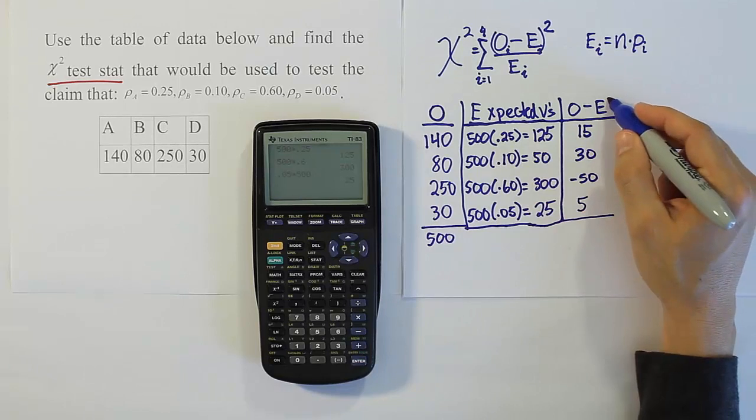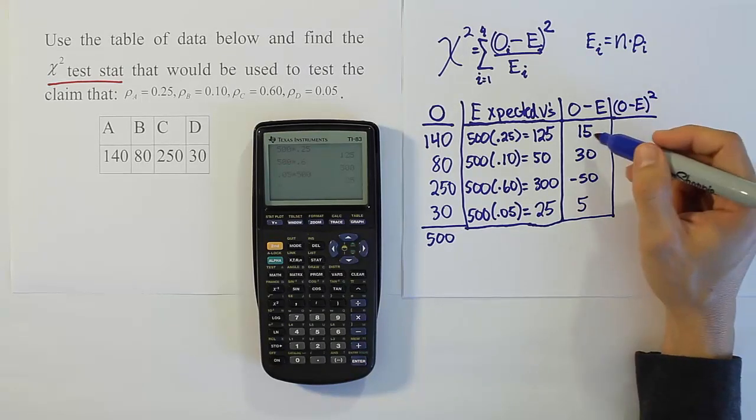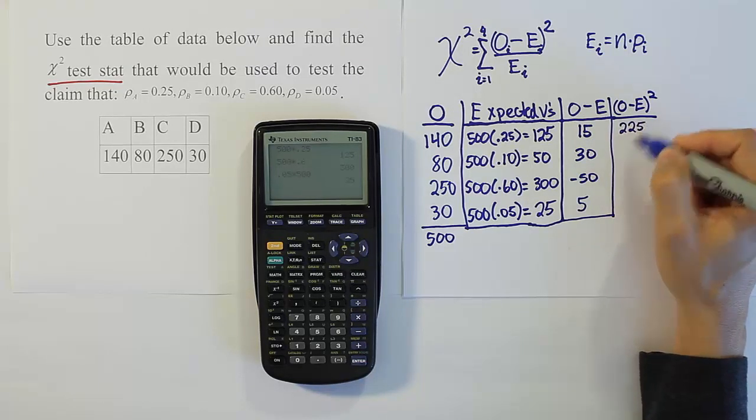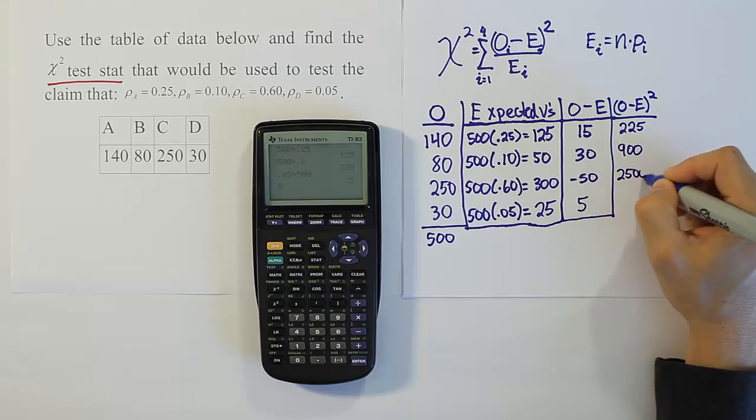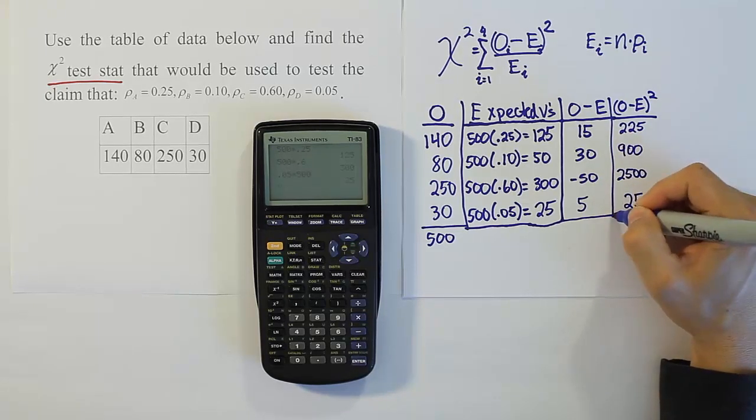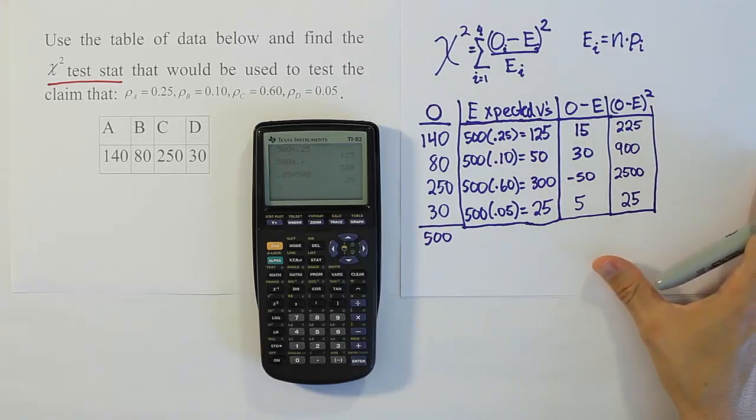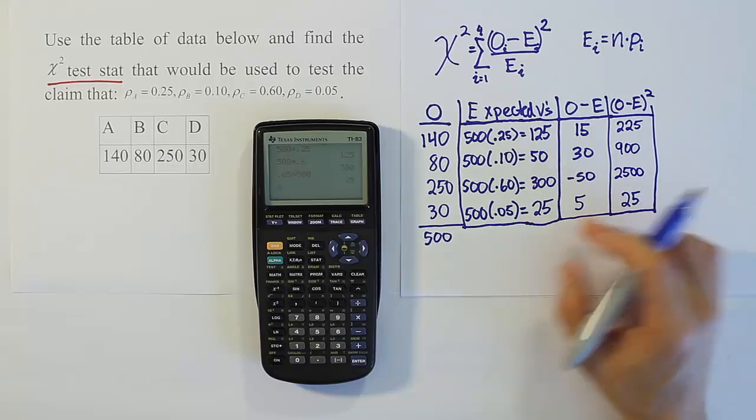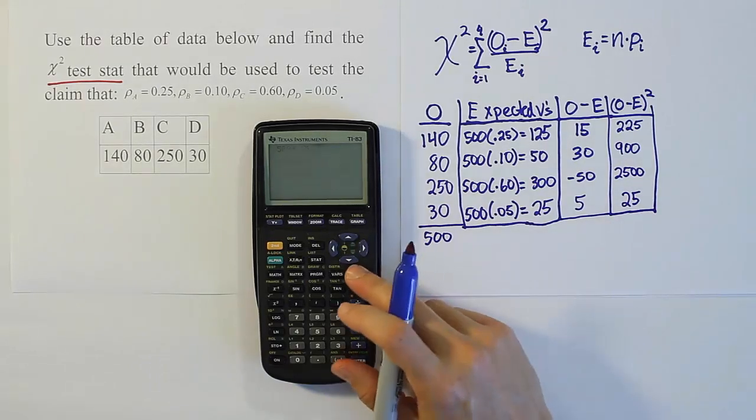Okay, then from there we're going to do our observed minus expected quantity squared. Okay, so we square each value in this column, right? So for example, 15 squared is 225. 30 squared is 900. 50 squared is 2500. 5 squared is 25. Of course, you can type all this in your calculator as well, right? And there are ways with the graphing calculator to do this faster as well. And I'll show that in other videos, how to use the graphing calculator to solve problems much quicker. That would be another section of the website though.